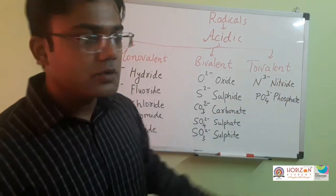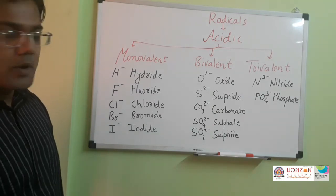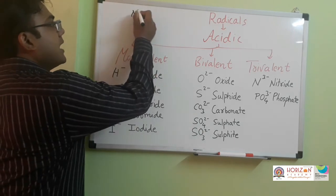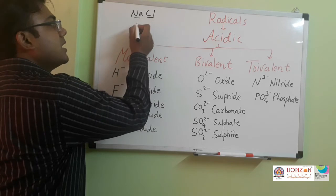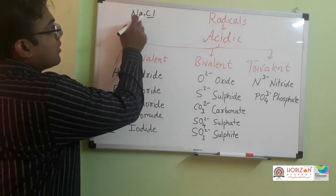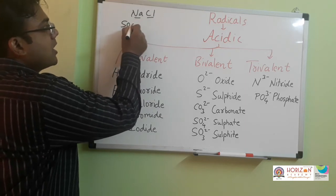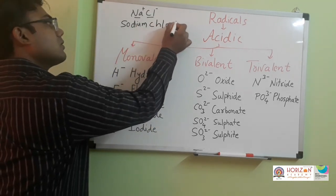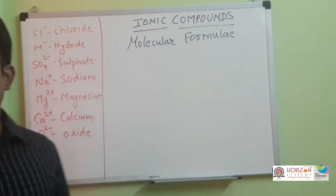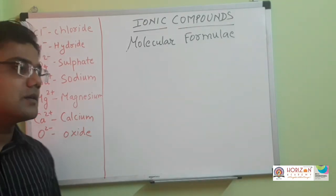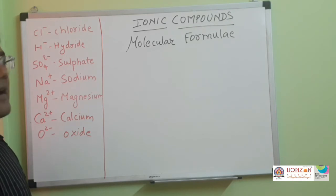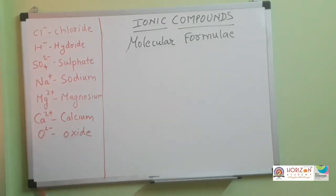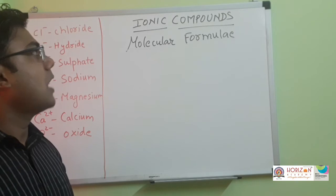When naming any ionic compound, use the names of both the acidic and basic radicals. For example, NaCl: Na plus is the basic radical and Cl minus is the acidic radical. Name the basic radical first: sodium. Then Cl minus is chloride. So the name is sodium chloride. These radicals are used for finding the molecular formula of ionic compounds, so you should know the valencies and names of radicals.